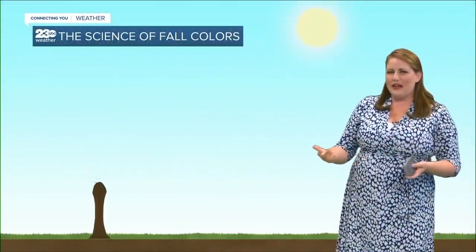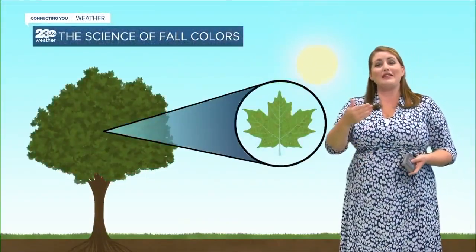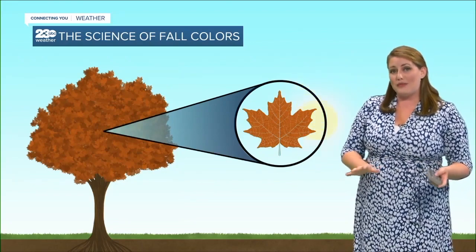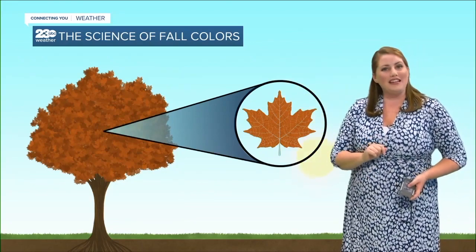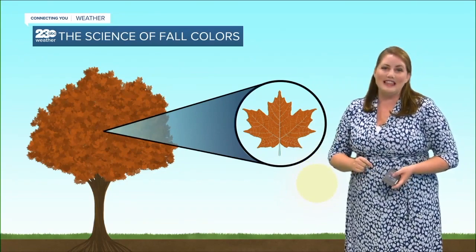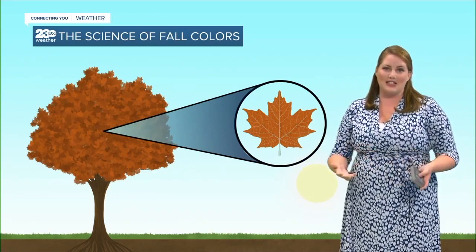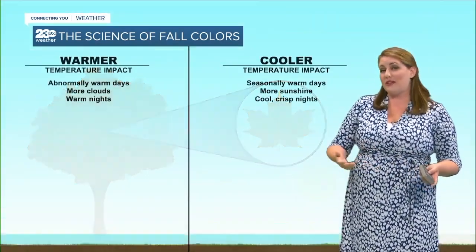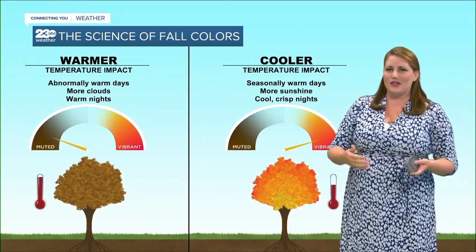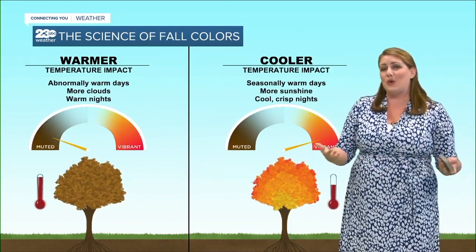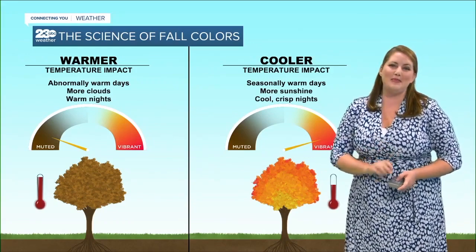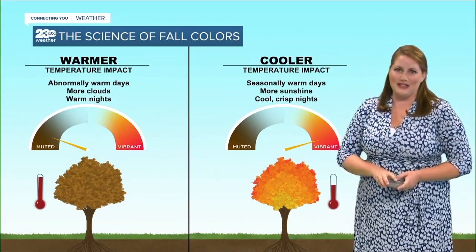So how does the weather affect autumn color? The amount and brilliance of the colors that develop in any particular autumn season are related to weather conditions that occur before and during the time chlorophyll in the leaves is dwindling. Temperature and moisture are the main influences. A cooler pattern — a succession of warm sunny days and cool, crisp but not freezing nights — seems to bring about the most spectacular color displays.